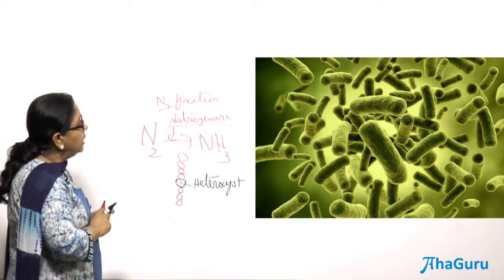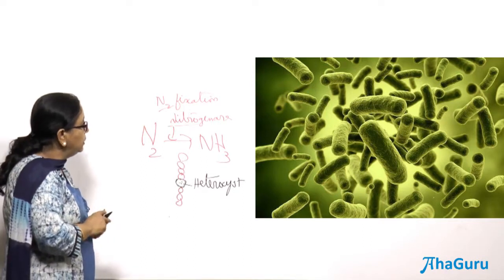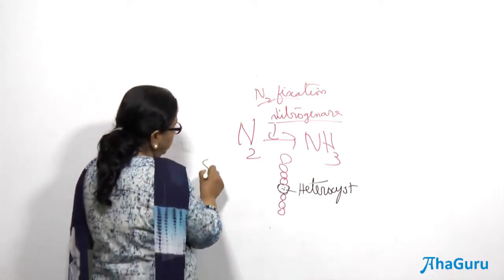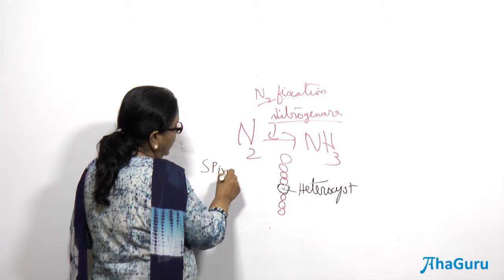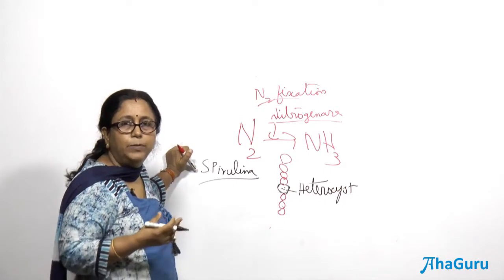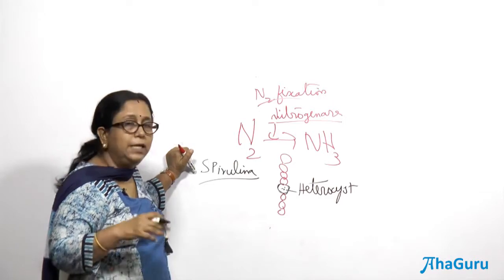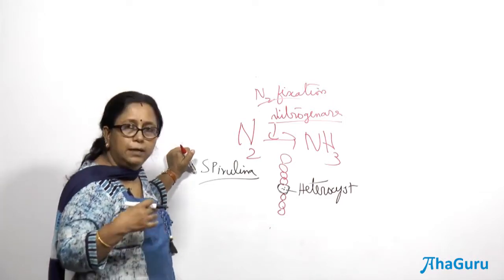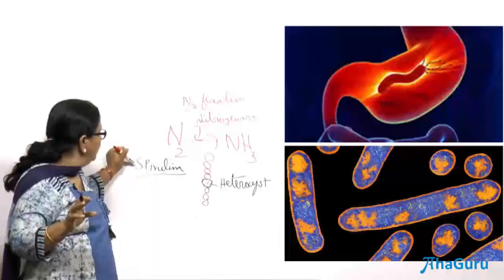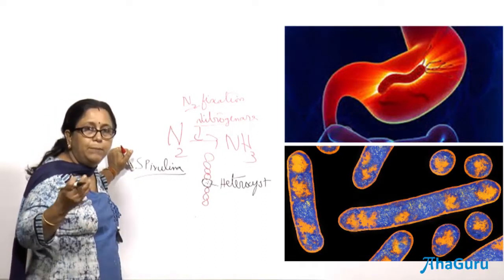Cyanobacteria reproduce by fragmentation. Many of them are also highly nutritious — for example, spirulina, one of the blue-green algae, is available as a tablet in medical shops because it is very rich in protein. It is classified as a single-cell protein and is edible. Not all cyanobacteria are edible — many produce toxins — but spirulina is edible and is used as a protein supplement.